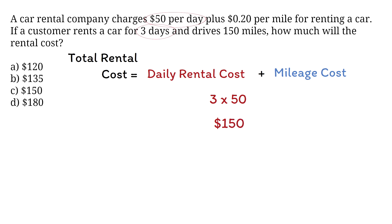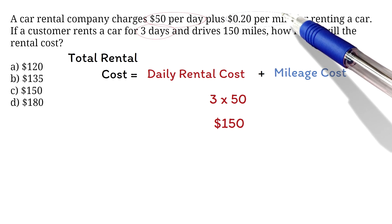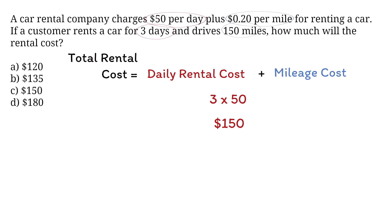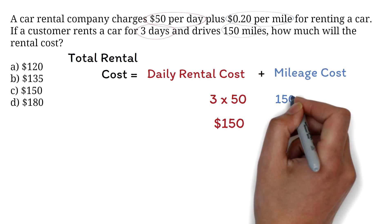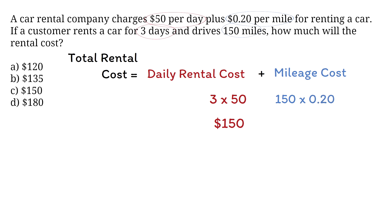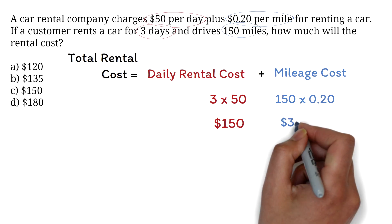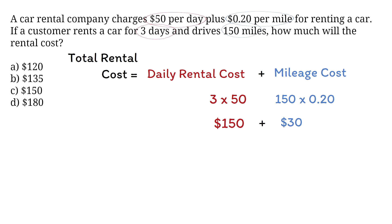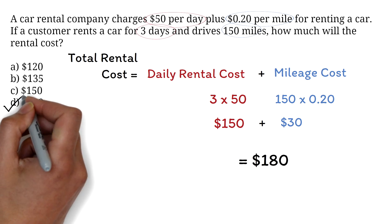Now let's calculate the mileage cost. The cost per mile is $0.20, and the customer drives 150 miles. The total mileage cost is 150 times $0.20, which is $30. Adding the daily rental cost and the mileage cost: $150 plus $30 equals $180. The correct answer is therefore D, $180.